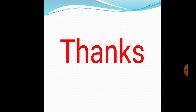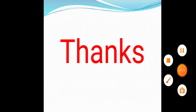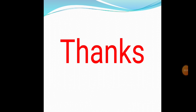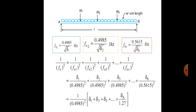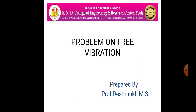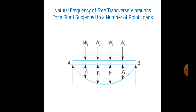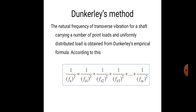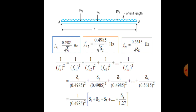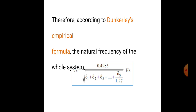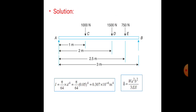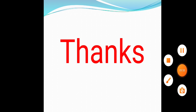Thank you all for watching this video. This topic is quite straightforward once you know the formulations. Before solving any problem, recall the Dunkley's method formulation: identify the different loads W, calculate the static deflections δ1, δ2, δ3 for each load using the deflection formula, then apply fn = 0.4985 / √(Σδ) to get the natural frequency. Remember these formulations — thank you all.